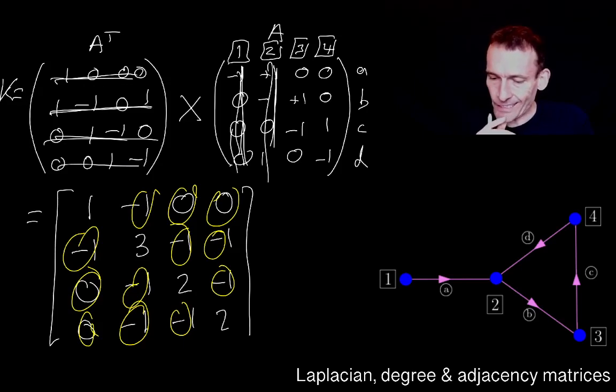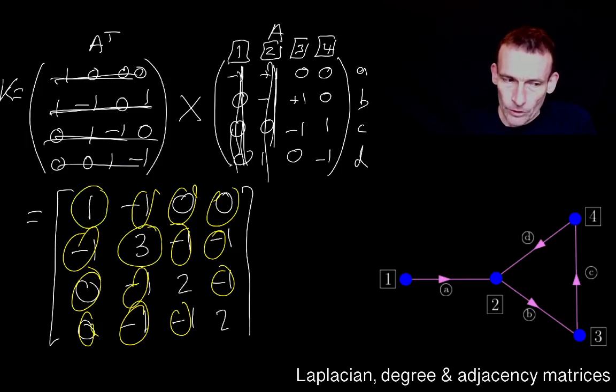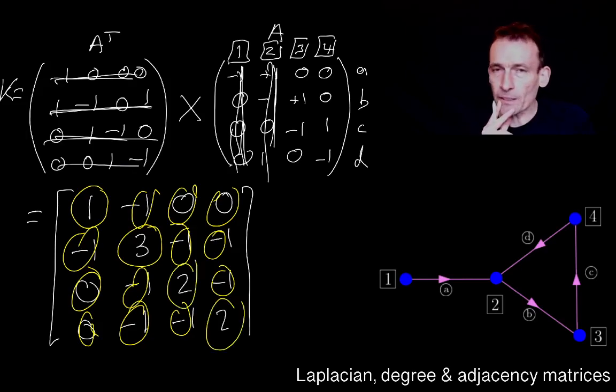And then let's test our conjecture about diagonal elements. Node one, the diagonal element is one and I noticed that it has one edge coming out of it. Node two has three edges coming out of it and the diagonal element is three. The other nodes three and four have two and those are consistent with that.